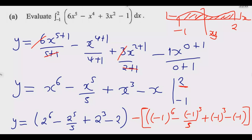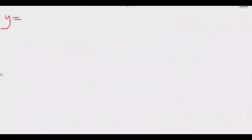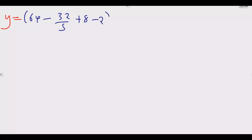Using the calculator: 2 to the power 6 is 64, 2 to the power 5 is 32, and 2 to the power 3 is 8. So the first bracket becomes 64 minus 32/5 plus 8 minus 2.